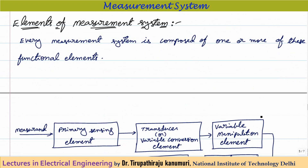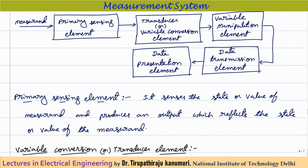Every measurement system is composed of one or more functional blocks. The input (measurand) enters the system and the final output is presented by a data presentation element. The output may be displayed, recorded (like an energy meter that integrates power consumption over a month), or fed back into a control system to reduce error.